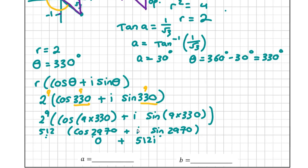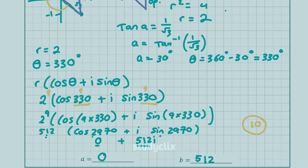We've rewritten root 3 minus i to the power of 9 in the form a plus bi. So a equals 0 and b equals 512. For that question you get 10 marks altogether. That's all for this question — I hope you found the solution video helpful and that it cleared up any concerns. Thank you very much for watching and I'll see you in the next video.